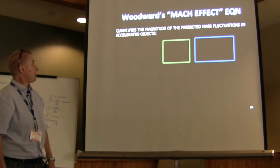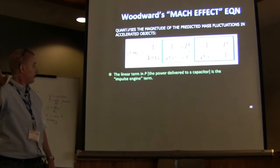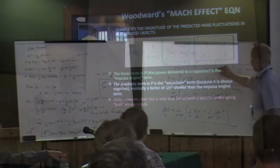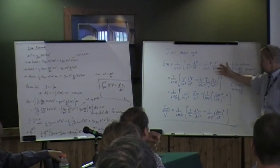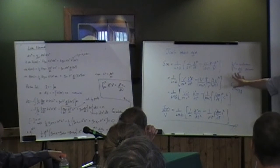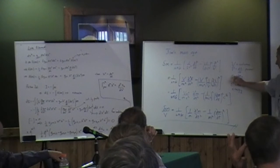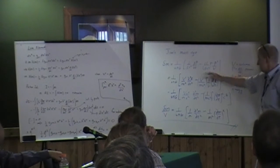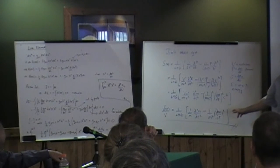This is Jim's Mach effect equation. This equation here is exactly that equation. What I want to show you is that you can derive the mass equation in this form. You've got volume, power, rest energy density, and energy, and with some substitutions you end up with a simple mass equation at the bottom.